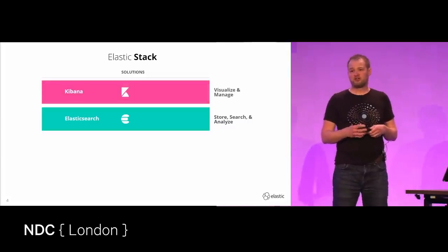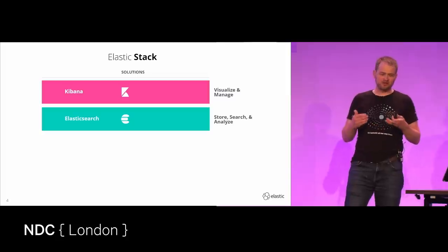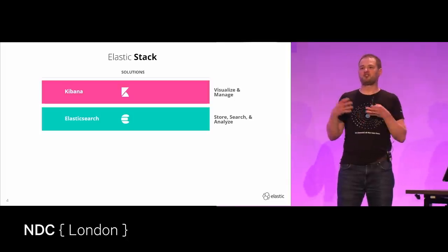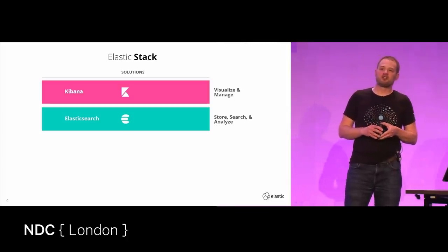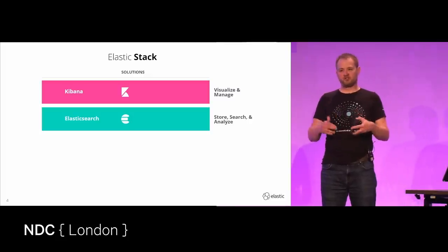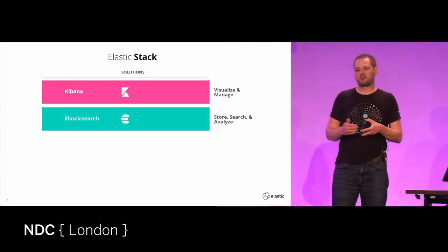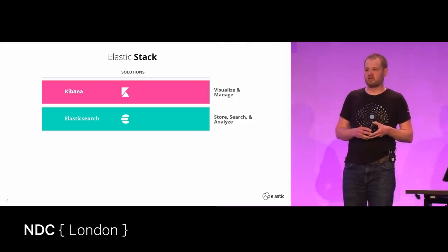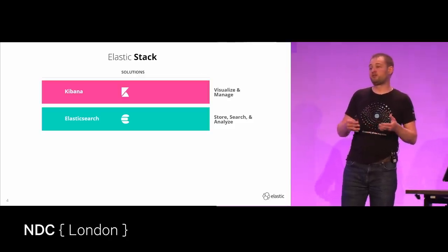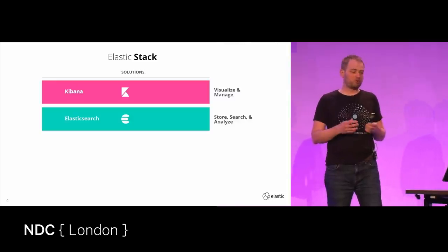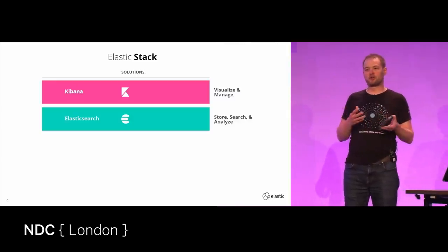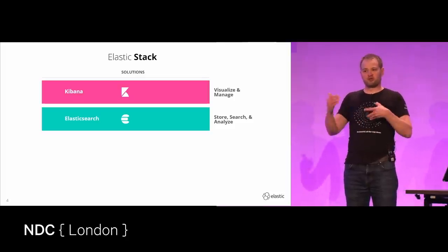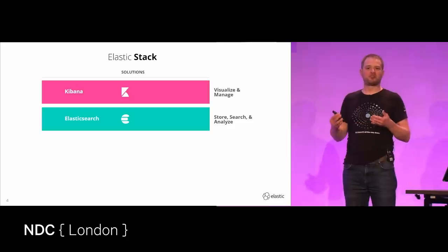One of the tools we have is Kibana, our UI layer. This gives you the capability to not only manage your Elasticsearch cluster — configuration, setting up users, that kind of operational management — but also the ability to visualize the data stored in those clusters. You can build dashboards and reporting tools. We used it quite extensively in my old job as part of our platform monitoring system.